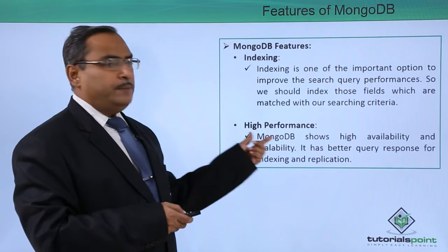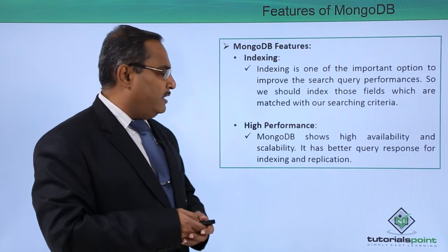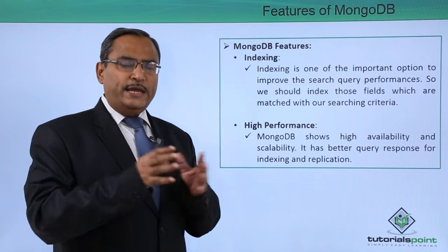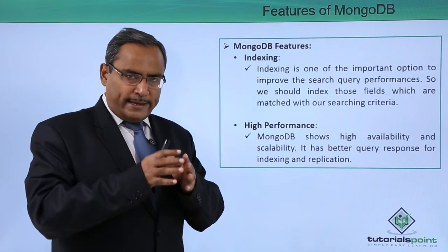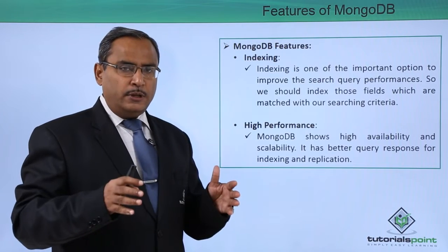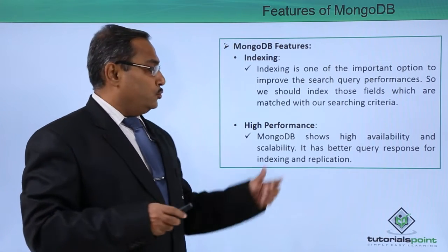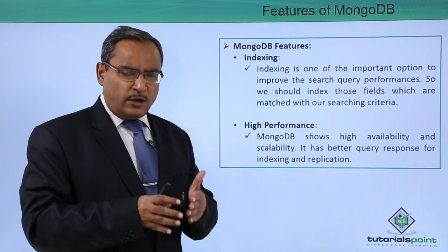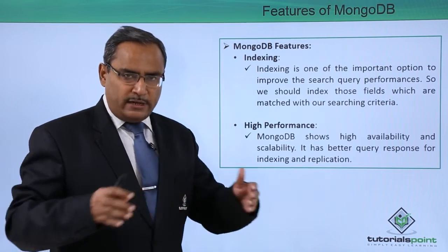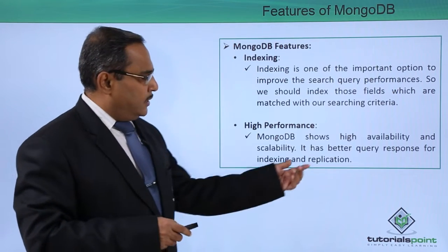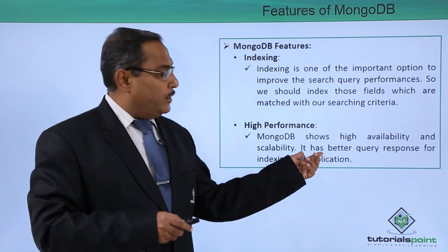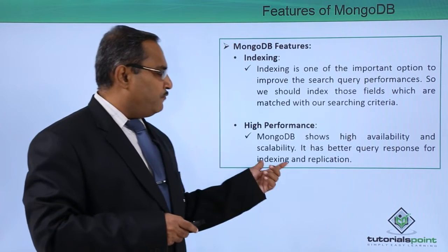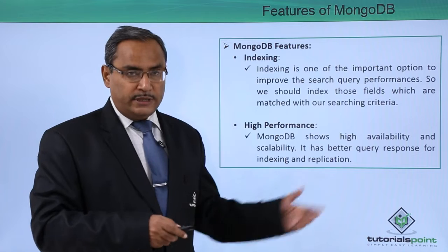Next is high performance. MongoDB shows high availability and scalability. When the workload is huge, it can be divided across multiple low-cost commodity servers, which increases scalability and divides the workload, resulting in high performance. It also achieves better query response through indexing and replication, which enhances the probability of data availability.